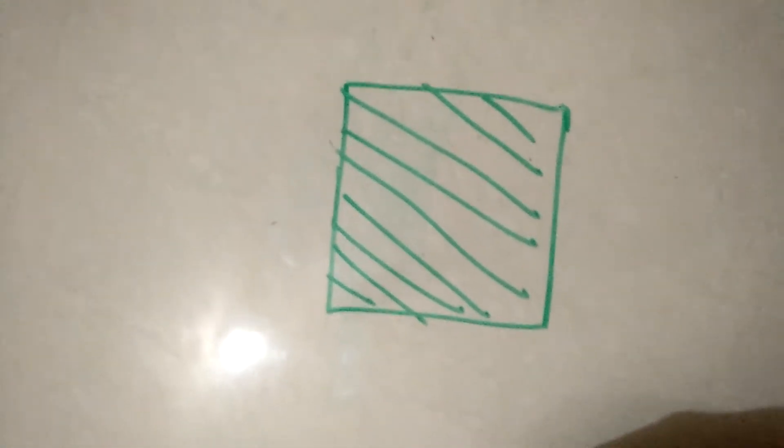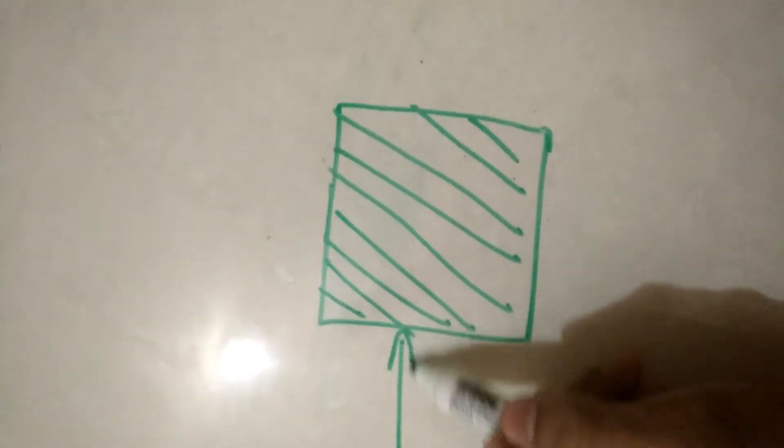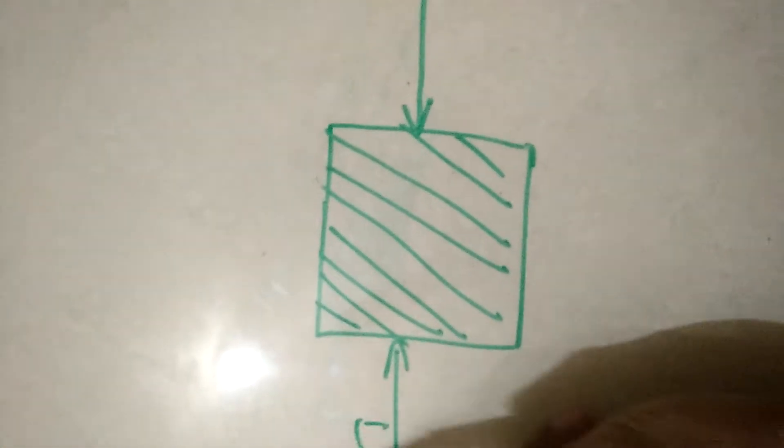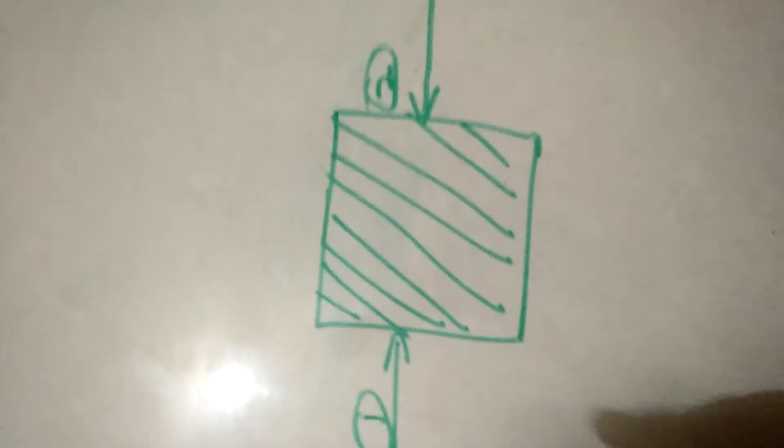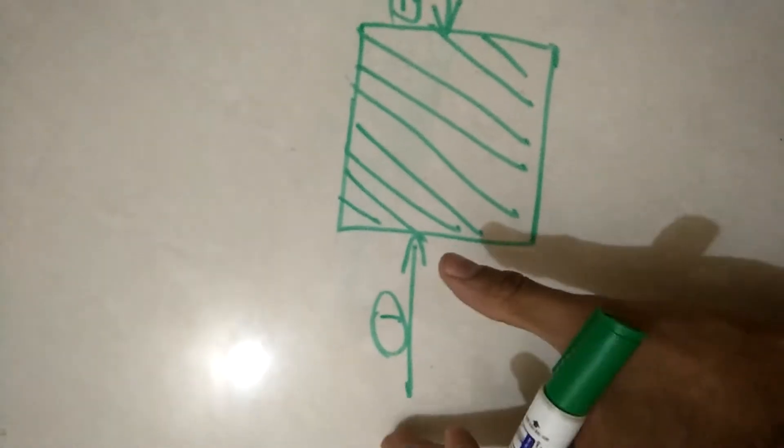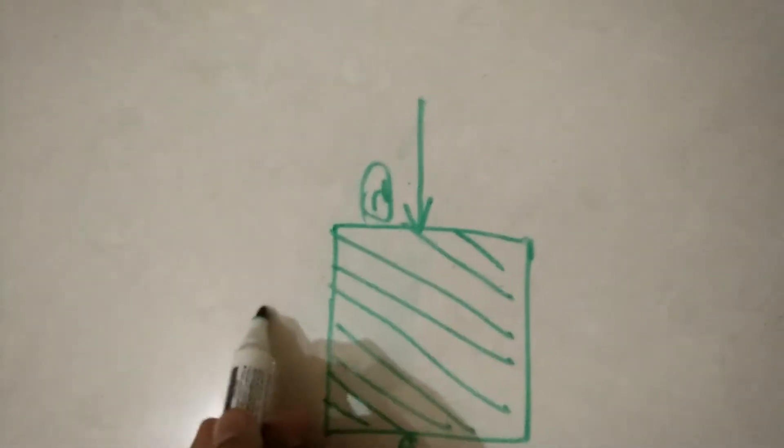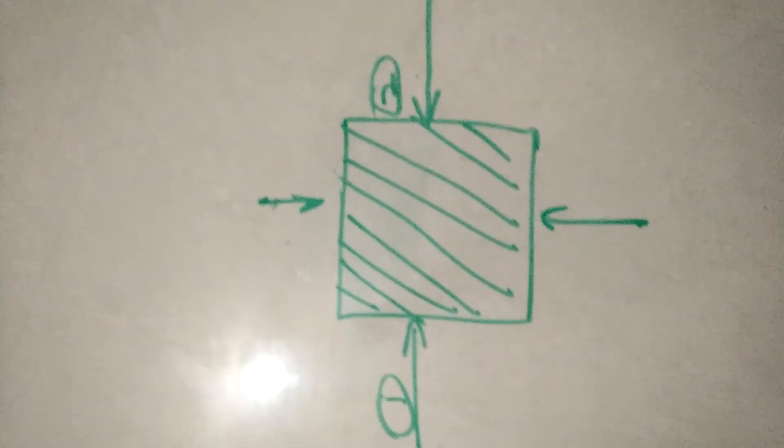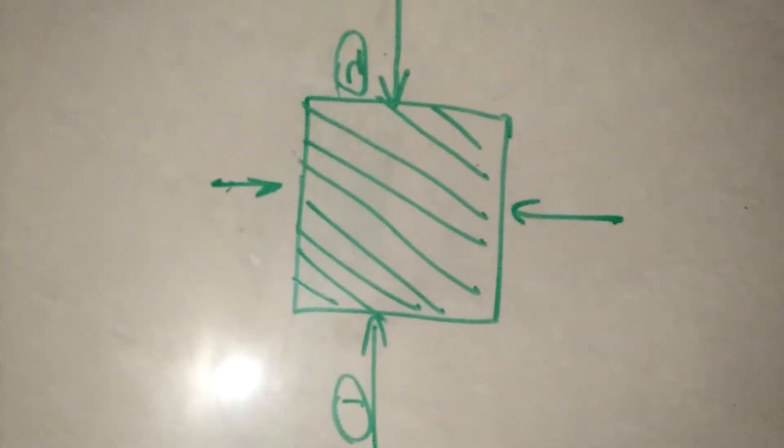Now if the mechanical pressure is applied on two of its opposite faces, first face and the second face, if the mechanical pressure or the force is applied on these opposite faces, then and then only a potential difference is developed on those opposite faces on which the force is applied.